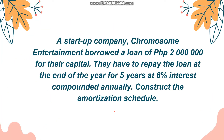Now let's construct an amortization schedule. A startup company, Chromosome Entertainment, borrowed a loan of 2 million pesos for their capital. They have to repay the loan at the end of the year for 5 years at 6% interest compounded annually. To construct the amortization schedule, we first identify what we need: the present value is 2 million pesos, the time is 5 years, the rate is 6%, and it is compounded annually.